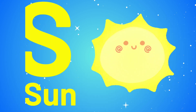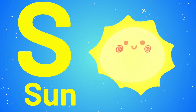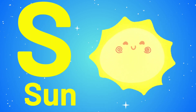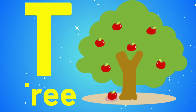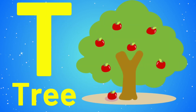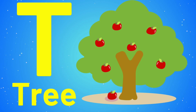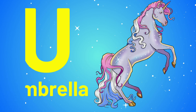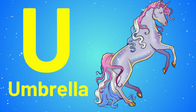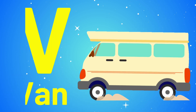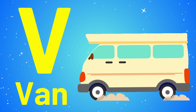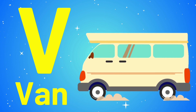S is for Sun. T is for Tree. U is for Unicorn. V is for Van.